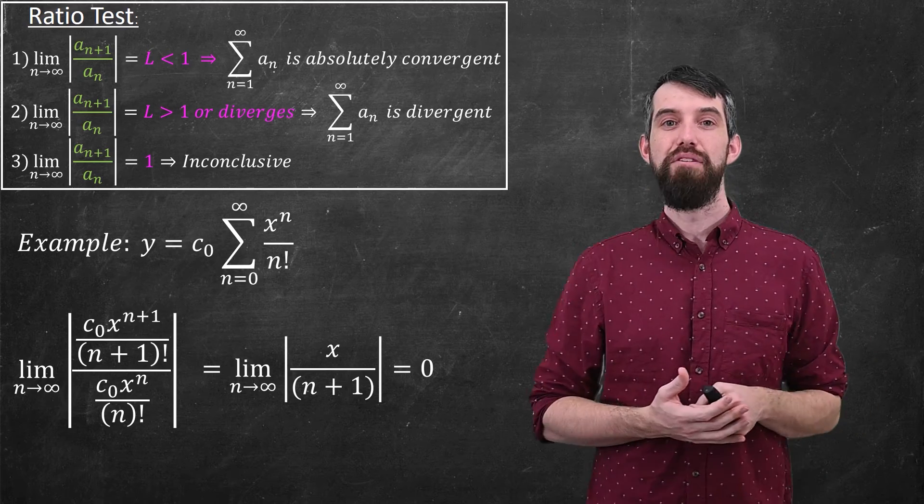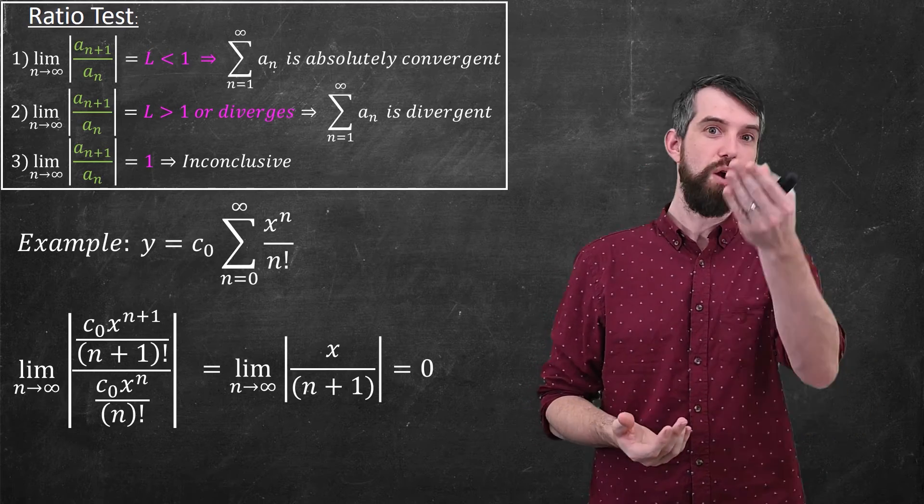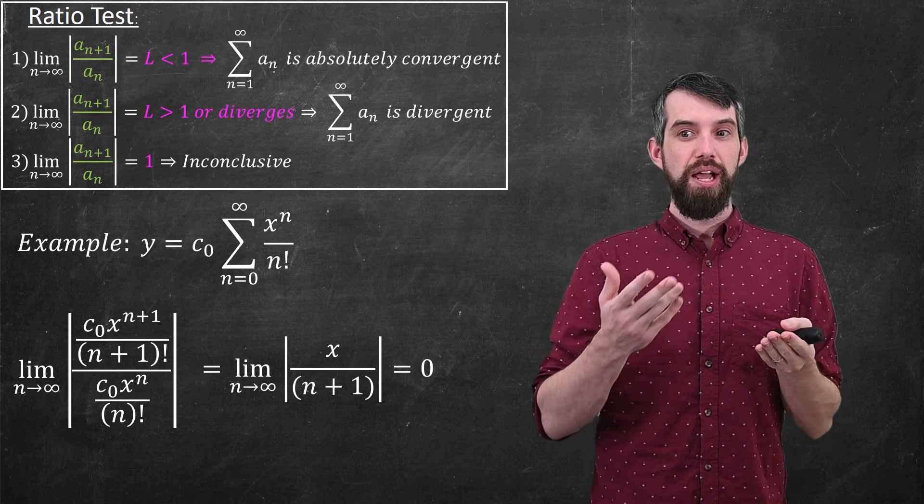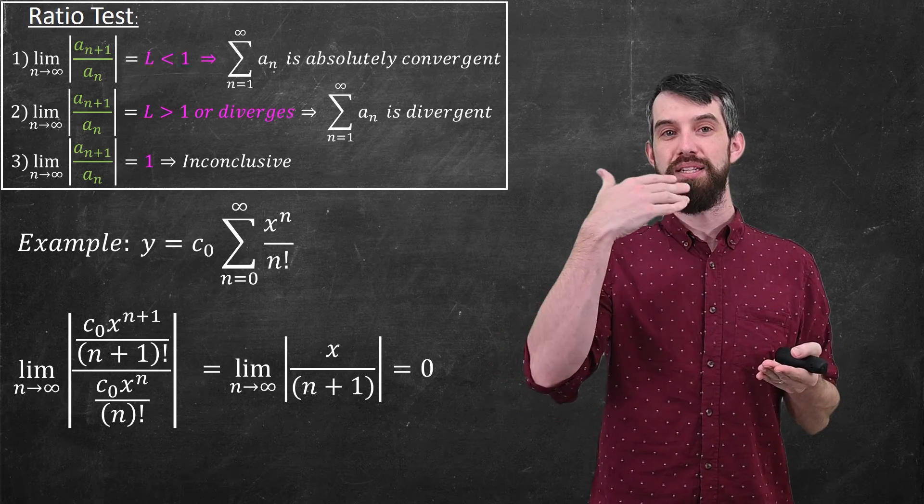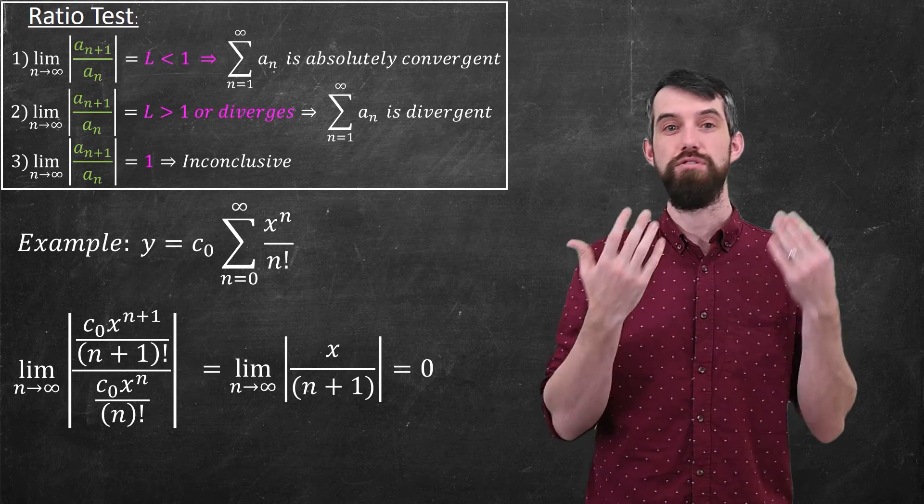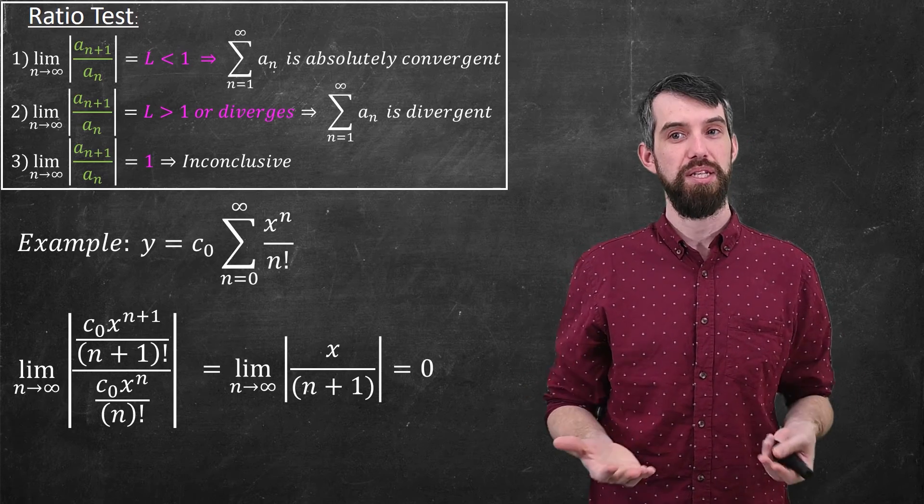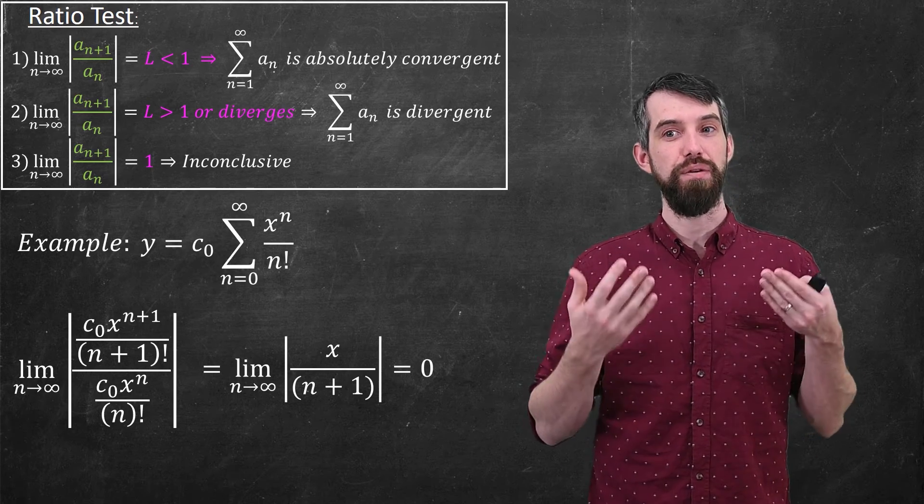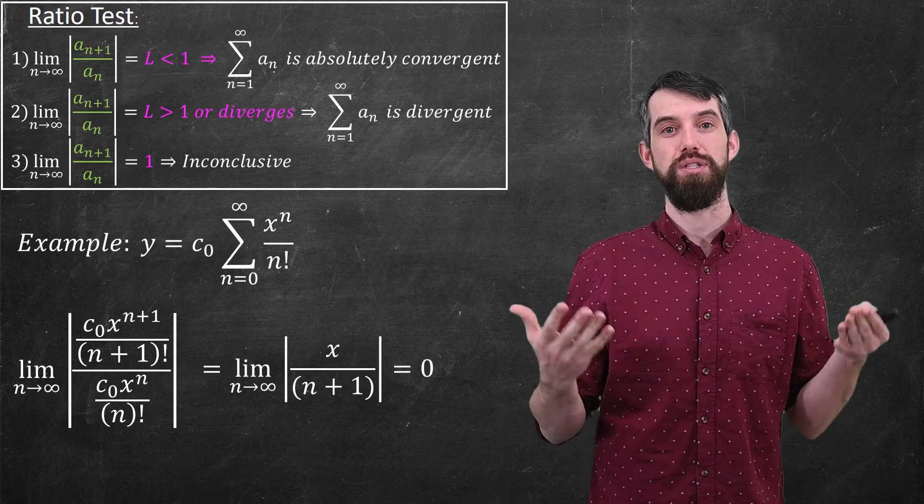This expression that we have is going to be zero, because no matter what your value of x is, say a billion, then you can always find values of n large enough to take x divided by (n+1) to as small as you might wish. So this limit is zero, and thus, by the ratio test, it converges for all values of x.